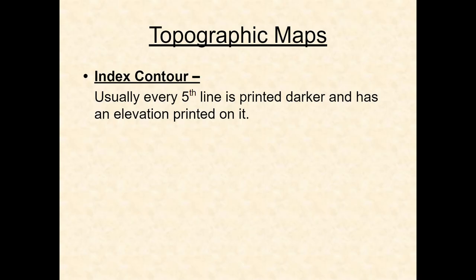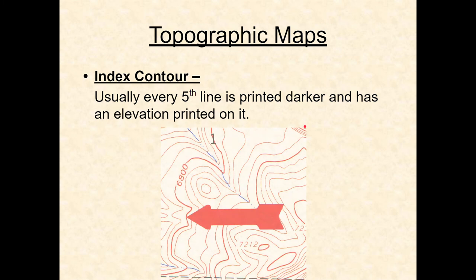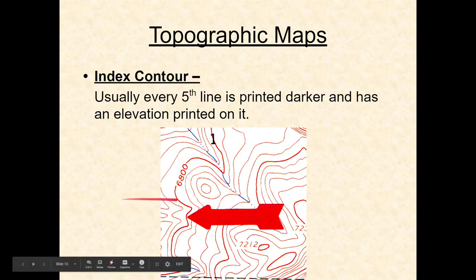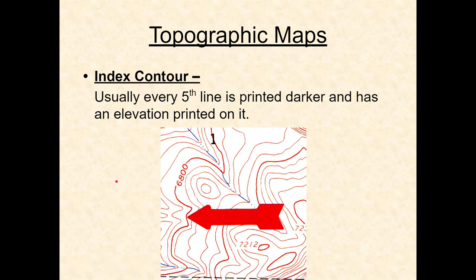Index contours are normally every fifth line, printed darker, with the elevation labeled on them. When you look at a topographic map, you'll find these bolder lines that you can follow to figure out exactly what the elevation is. For example, this one here is 6,800 feet.